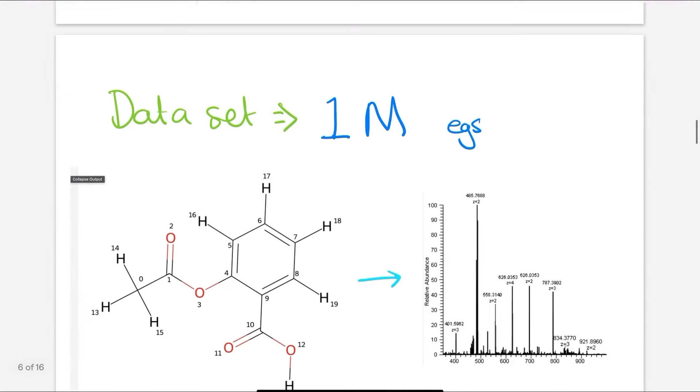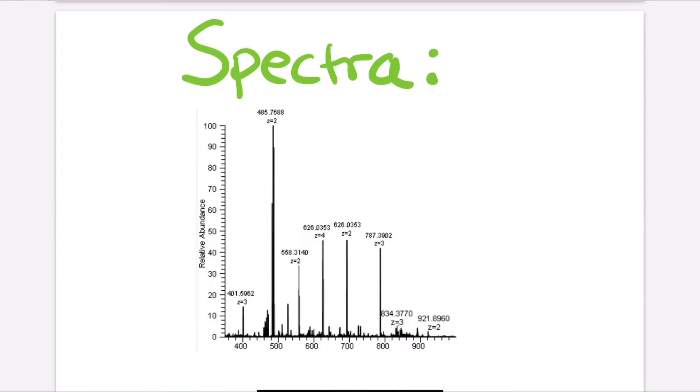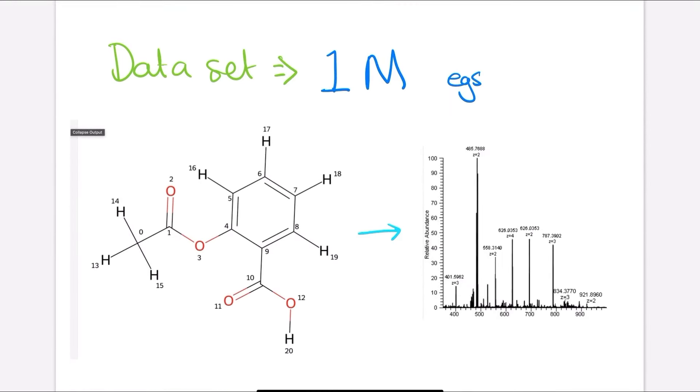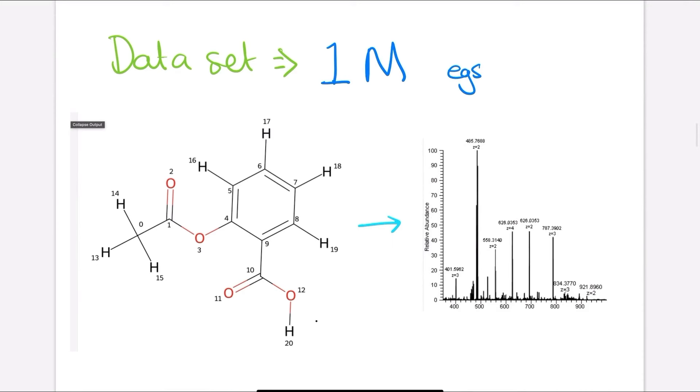Now our problem was to basically do the reverse problem of this. So we had a data set with one million examples of identified molecules like this one, and then the spectra that actually came out during experiments or in silico. And we had to try and make a model that would be able to solve this problem in general. When you put in a molecule here that we know, what does the spectra look like?